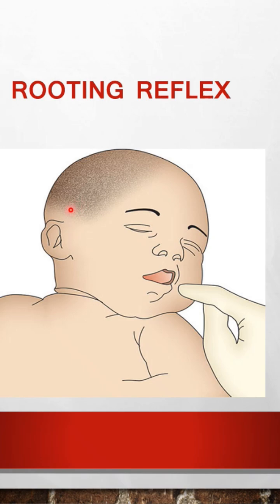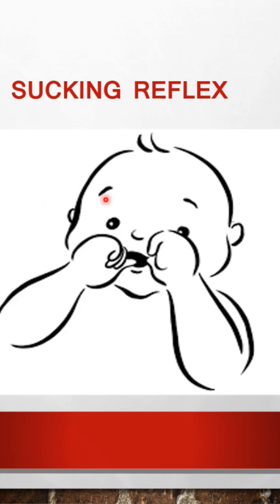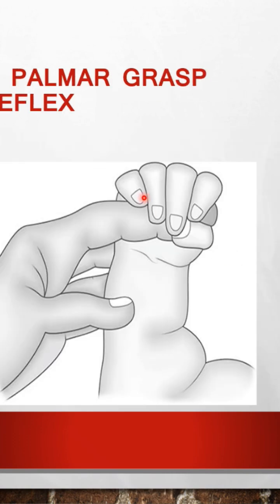The second is the rooting reflex. When you stroke the baby's cheek, the baby turns its head to suck. The disappearance age is 4 months. The third is the sucking reflex — the baby sucks when a nipple or finger is placed in the mouth. Disappearance age is also 4 months.